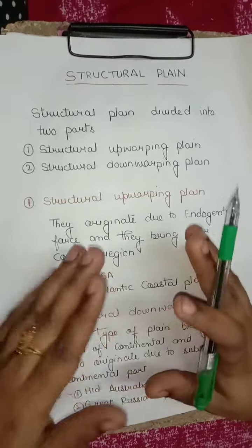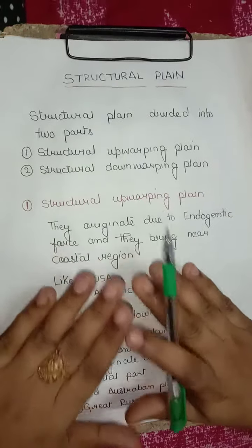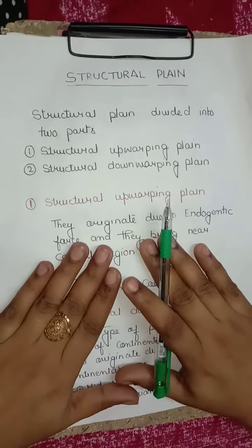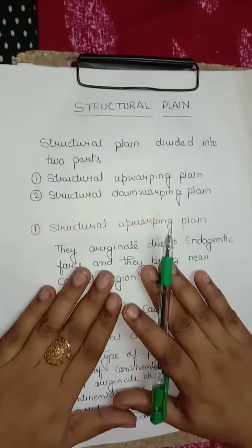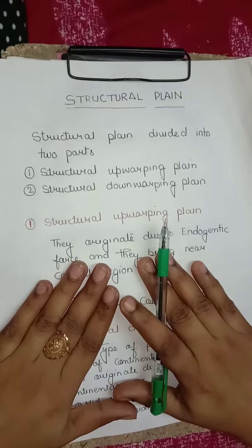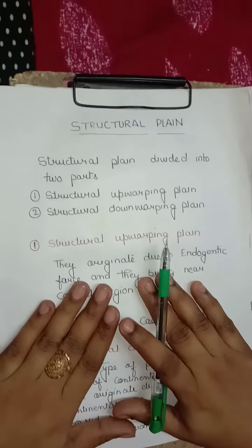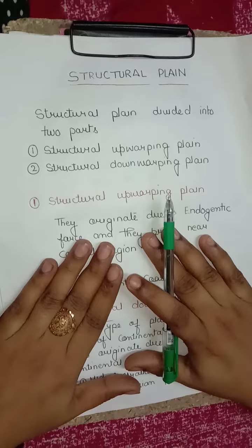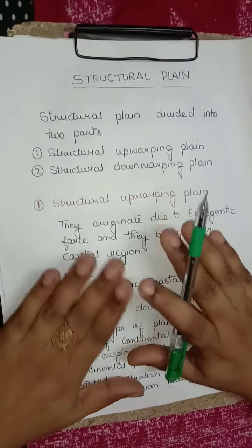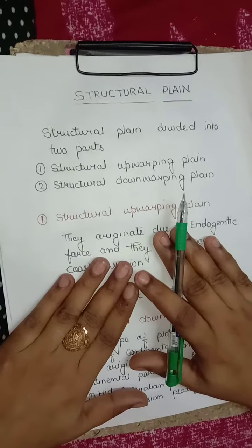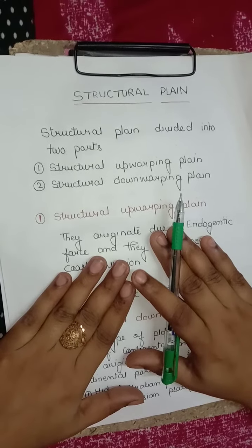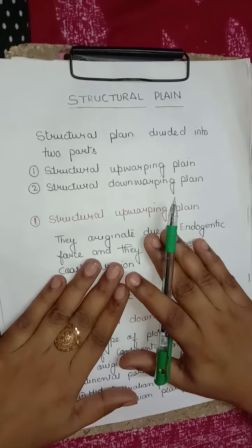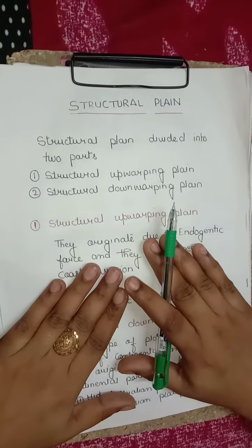First we discuss the meaning of structural plains. These are structurally depressed areas which make up some of the most extensive natural lowlands on the earth's surface. They are formed from horizontally bedded rocks, relatively undisturbed by the crust movements of the earth. These include the great plains of the Russian platform, the great plains of the USA, and the central lowlands of Antarctica.